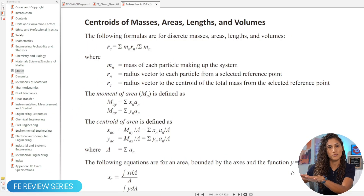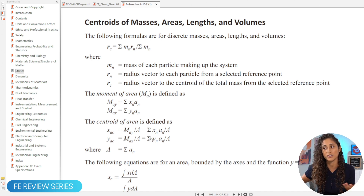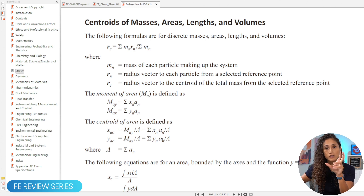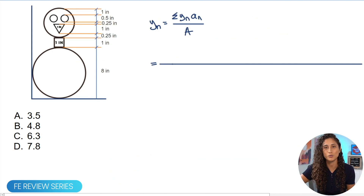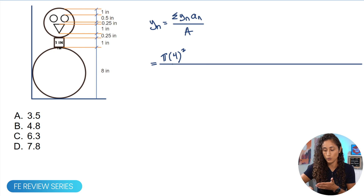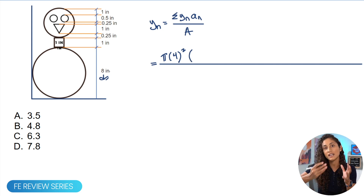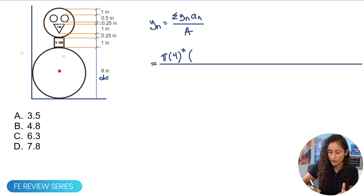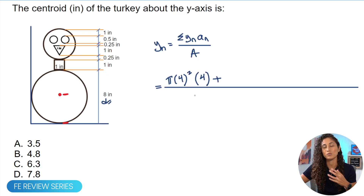From the reference handbook, we use the centroid equation for an area about the y-axis: the sum of ȳ_n times A_n divided by the total area. Here ȳ_n is the centroid of each shape referenced back to the origin. Starting with the first circle: the area is π × 4² (radius is 4 since diameter is 8), multiplied by the centroid distance from the circle center to the origin, which is 4.